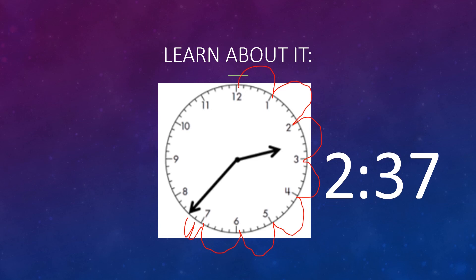So here we have both the analog way of showing it and a digital. You can also write it in word form: 2:37.